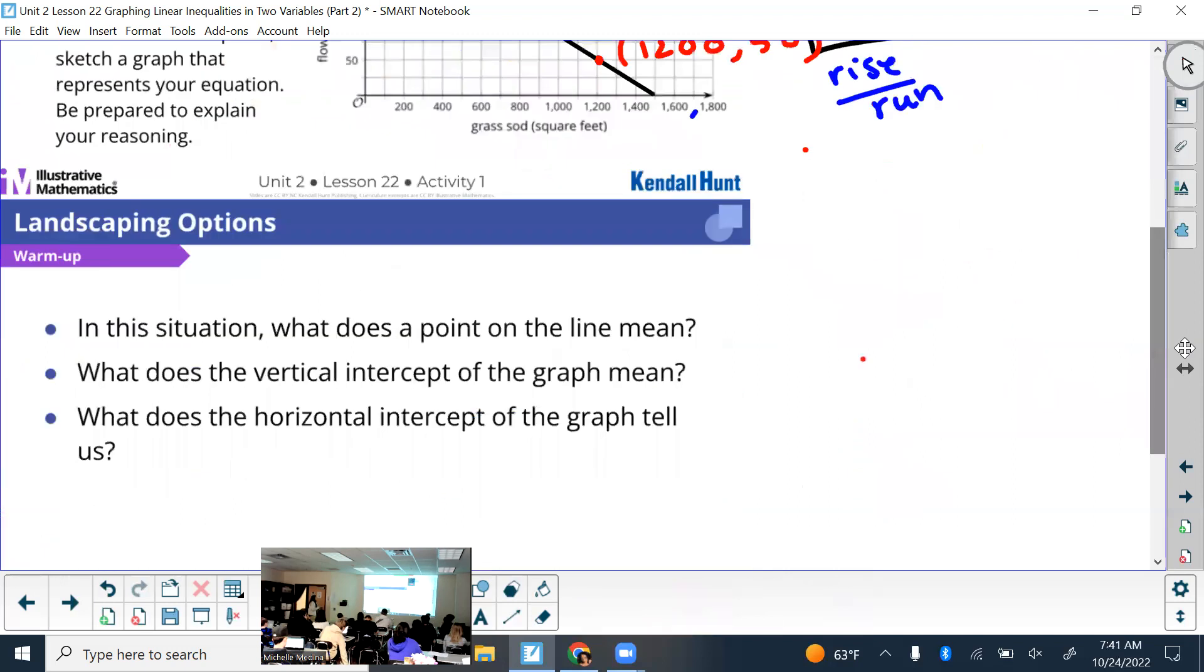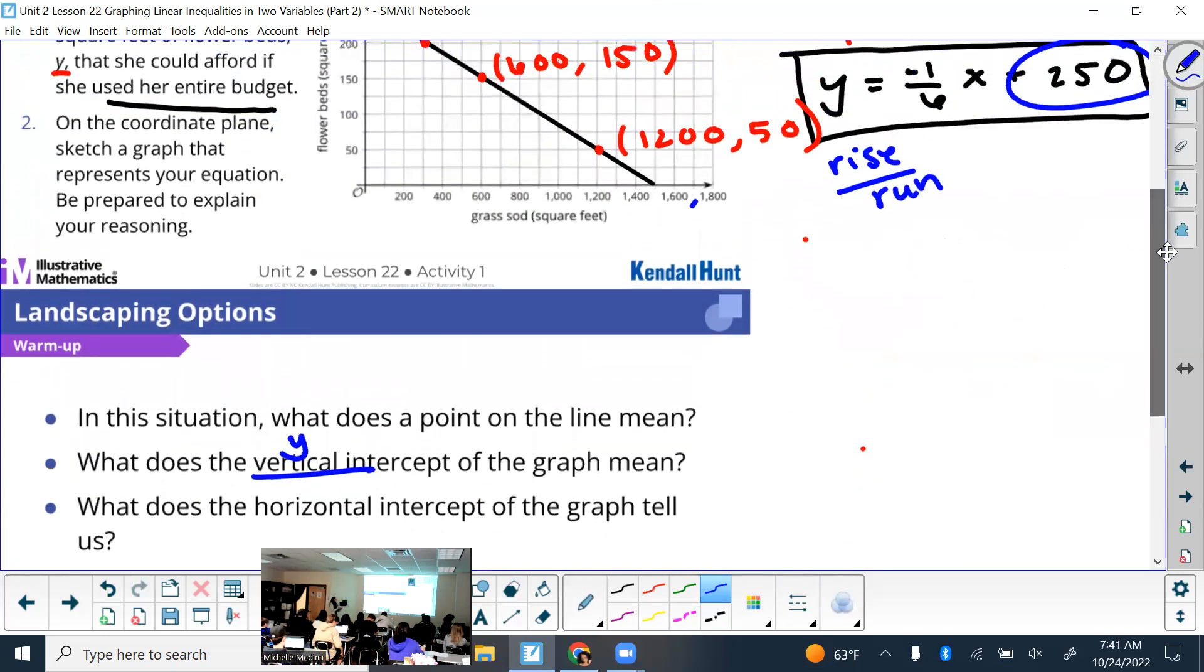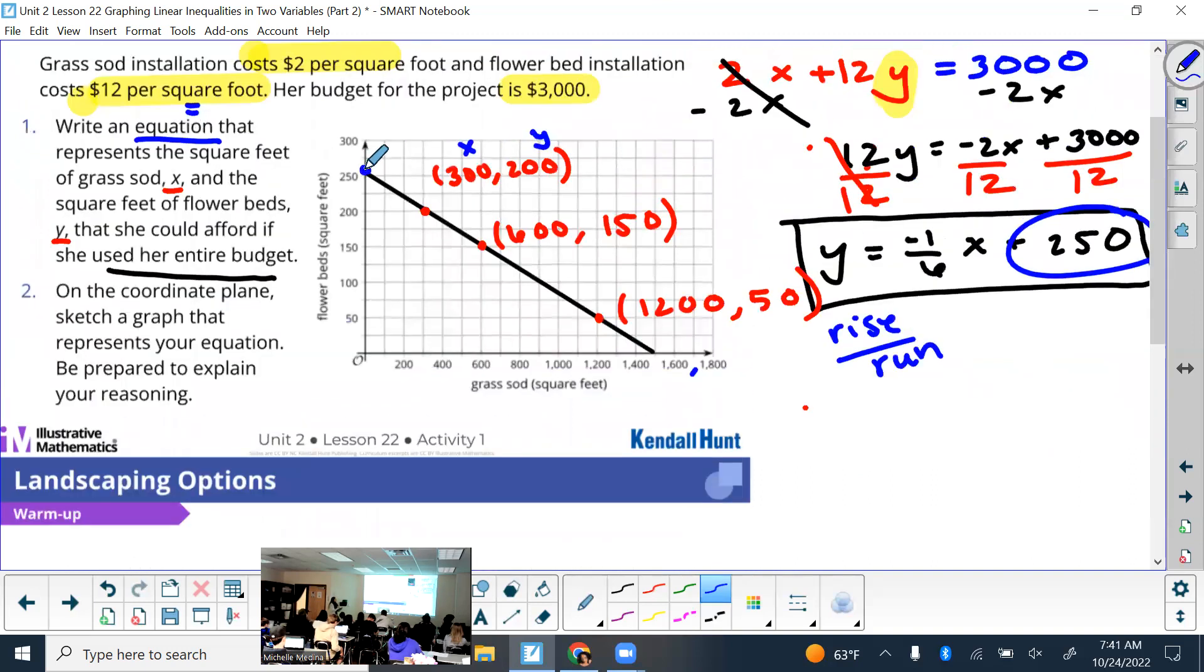All right, then landscaping options. Kind of talked about this already. It says, what does the vertical intercept of the graph mean? That's our y intercept, just so you know. Right. So which axis is the vertical axis? The y axis. So what does the 250 mean? Zero grass and 250 flower beds. Good. So it's either that, when you're comparing the two variables, one is zero and one is like the maximum. Or if it's a different type of situation, it might be like a starting amount.